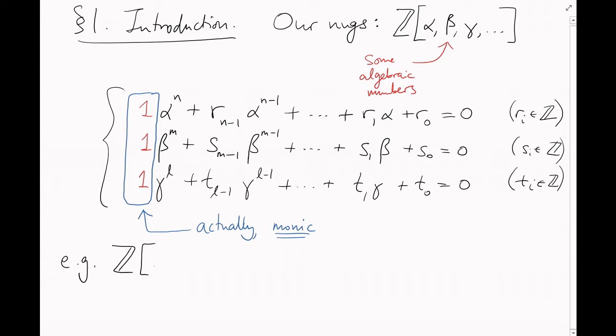So for example, the thing I've been calling Z adjoin root minus 5 is really just Z adjoin alpha, where alpha is defined by the equation alpha squared plus 5 equals 0.